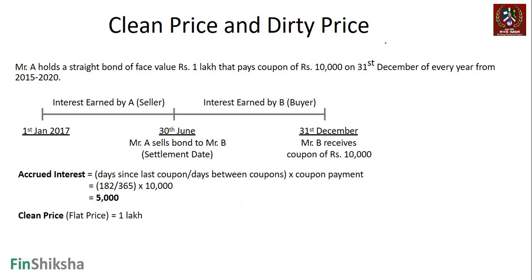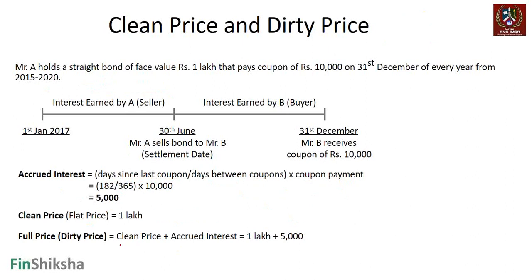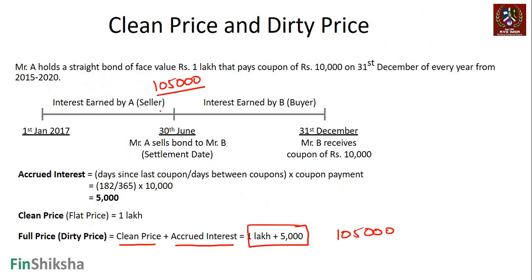The clean price of this bond — also known as the flat price — will remain 100,000 if the interest rate stays at 10%. But person A will not be happy with just 100,000; A will want the extra 5,000 as well. The dirty price, or full price, equals the clean price plus accrued interest. So the bond price on that date will be 1,05,000. When person B pays 1,05,000, effectively 5,000 has been paid to A, and when B receives 10,000 at year end, the net receipt for B is 10,000 minus 5,000 = 5,000.